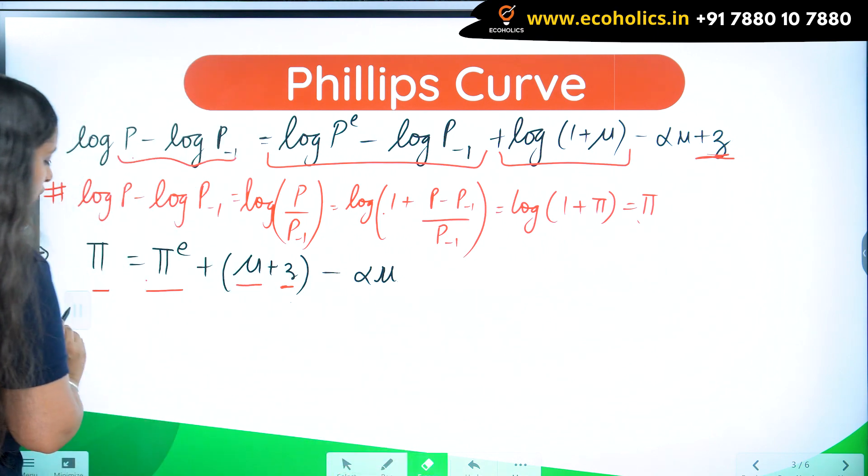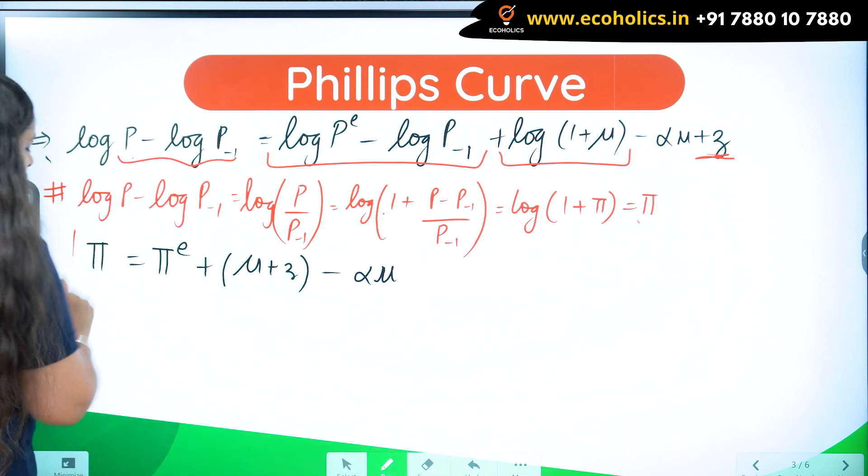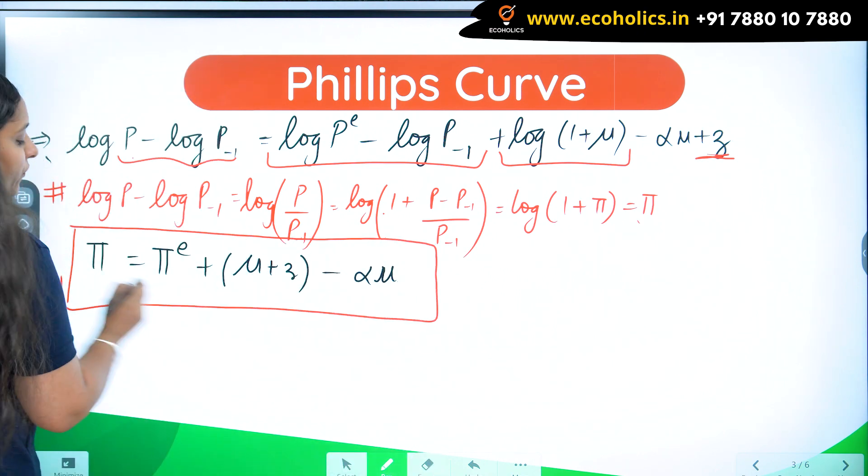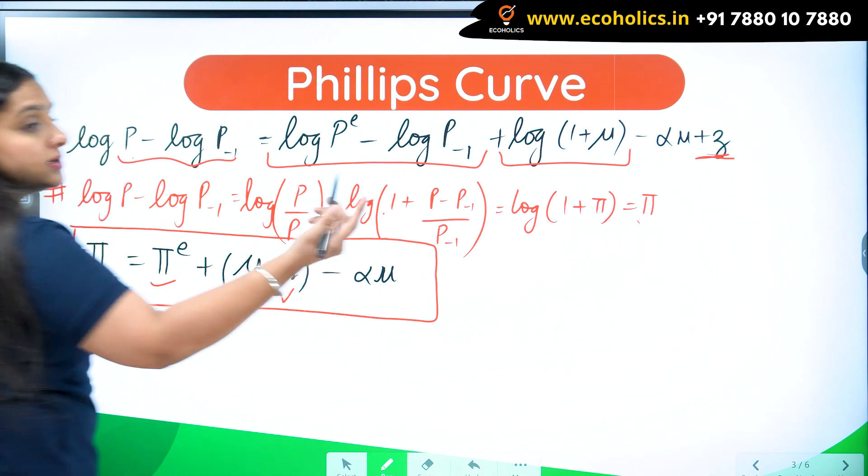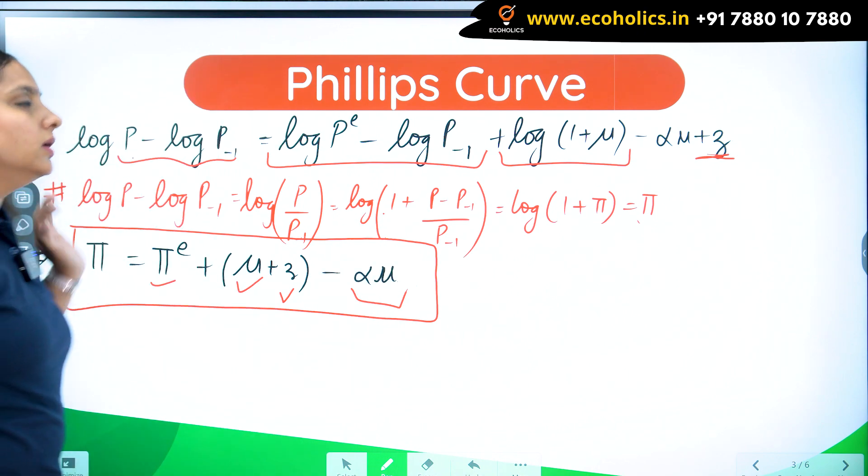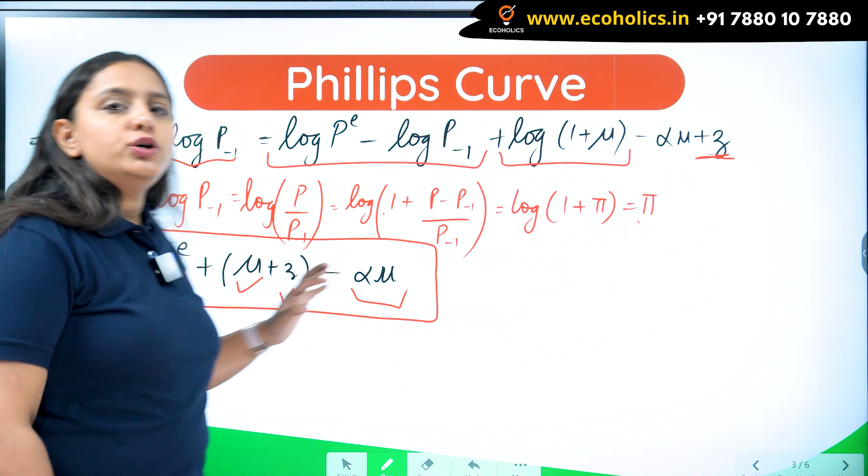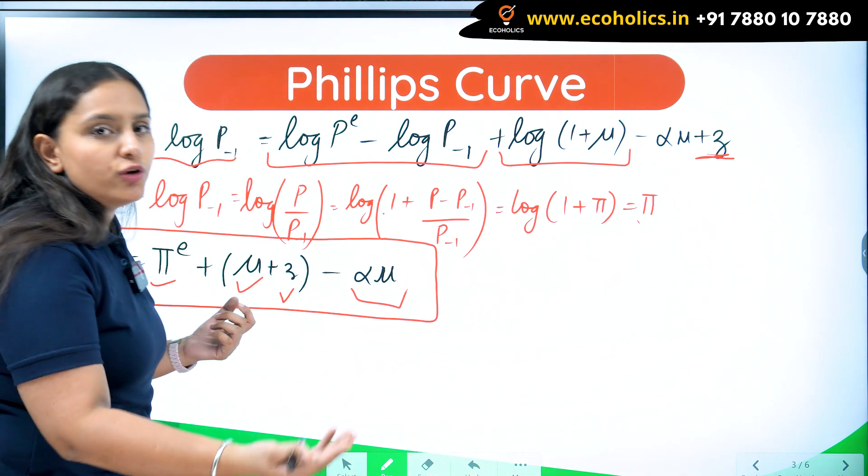This is the equation of your Phillips curve finally, which tells you that inflation today is a function of expected inflation, markup, other factors like unemployment benefits, and the unemployment rate in the economy.